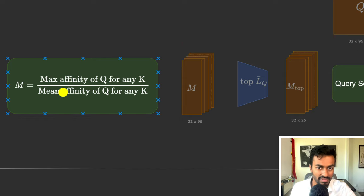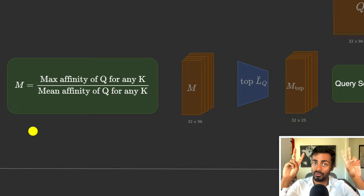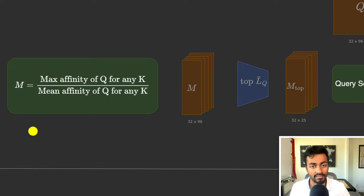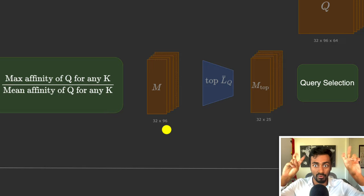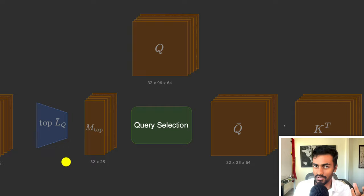Next we compute M: the max affinity of a query for any key divided by the mean affinity. All of this determines for every single query vector what is the most important query with the most information encoded. This information is encoded as a single number per query vector, giving shape 32 × 96. We want to extract the L_Q_bar = 25 most important queries, stored in M_top.